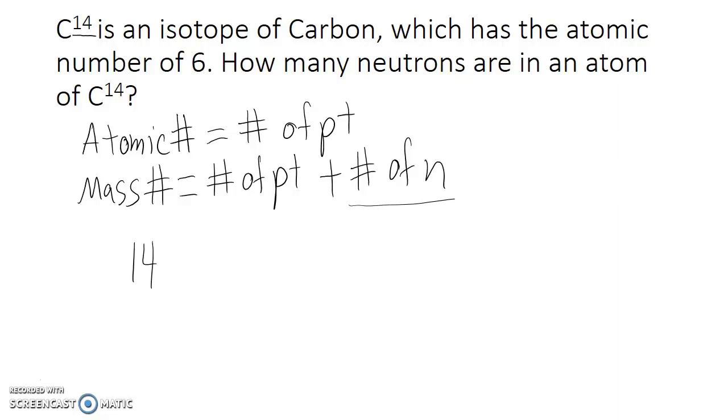So if we take our mass number and we subtract the number of protons from it, which in this case is 6, then our resulting number is the number of neutrons. So carbon-14, an atom of carbon-14, has 6 protons and 8 neutrons.